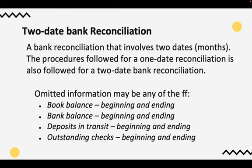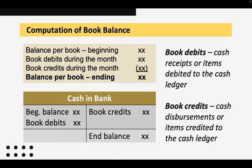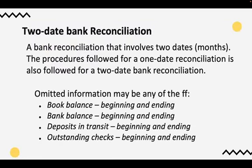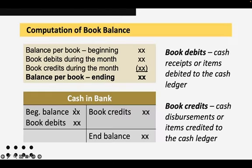If one of these items is missing, there's a way to compute for omitted information — it's solvable using the other information given in the problem. We have a formula. For example, if book balance is missing — either beginning or ending — remember how we compute for book balance: we start with your beginning balance, then add book debits minus book credits, and you'll get your ending balance. When you debit cash, you receive cash; when you credit cash, you spend cash.